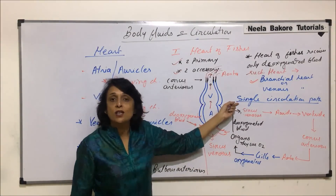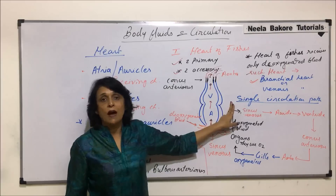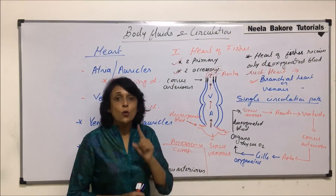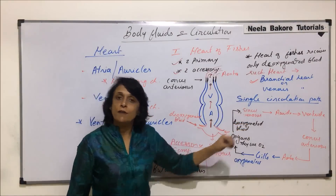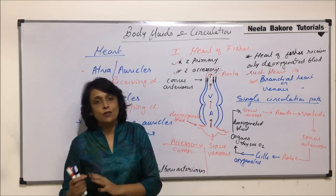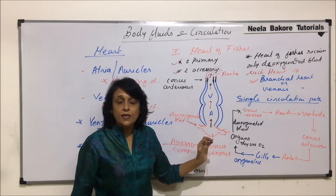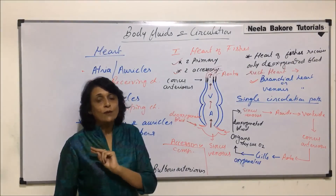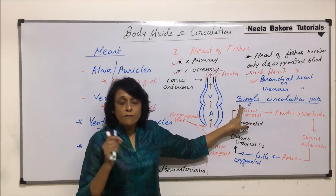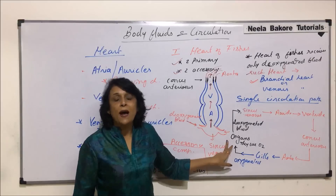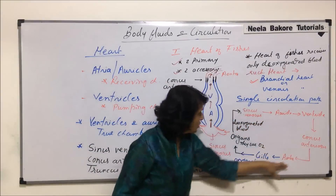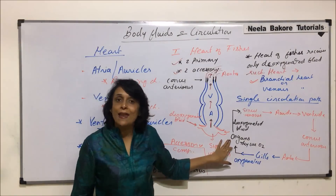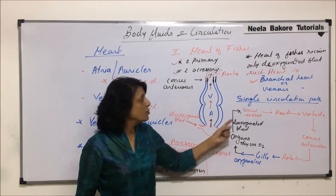Why is this called single circulation? The term single circulation is given to the heart when blood supplied to an organ passes through the heart only once. In our case — humans and other organisms — before blood is supplied to any organ, it passes through the heart two times, which is called double circulation. So single circulation means before the blood is supplied to any organ it passes through the heart only once. It goes to the organ, goes back to the heart, and comes back to the organ — through the heart only once.